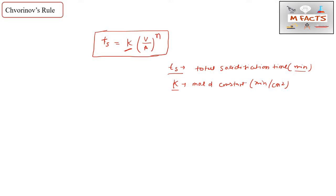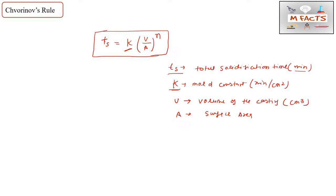V is the volume of the casting — it will be in centimeter cubed if k is in per centimeter squared, or in mm cubed if k is in per mm squared. A is the surface area of the casting, and this is the point where most students make mistakes. The unit of surface area is centimeter squared, consistent with the unit of area.